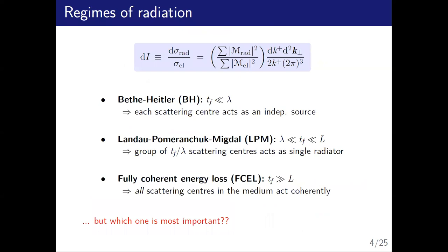There are a bunch of different regimes, all separated by the formation time. If the formation time is very small, then every single scattering in the whole medium just acts as an independent scatterer. As the formation time goes up — which relates to the energy of the radiation spectrum — you go into the LPM regime where you collect certain groups of scatterers over the mean free path. And when the formation time is very, very large, then basically the entire medium just looks like a point scatterer. That's the coherent energy loss regime. In phenomenology, which regime is more important depends on the process and the type of radiation.